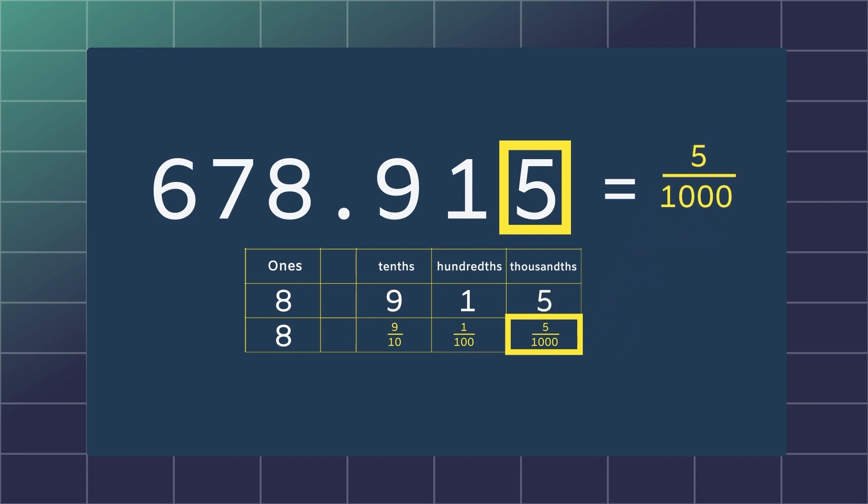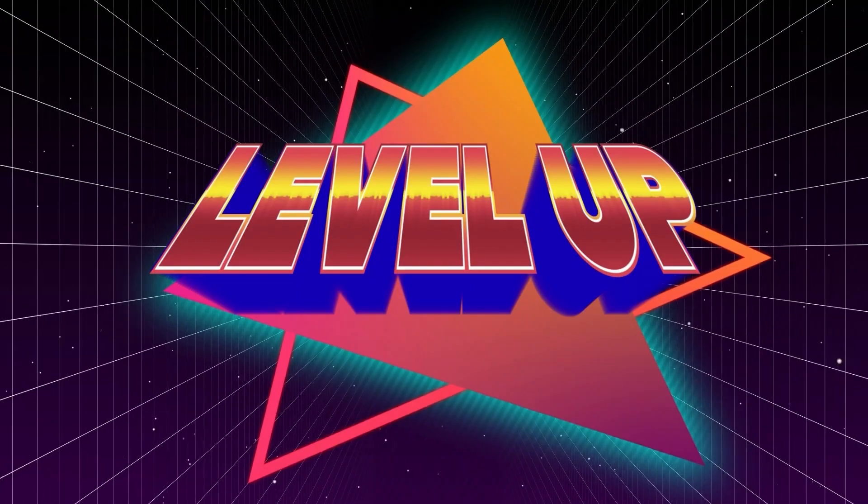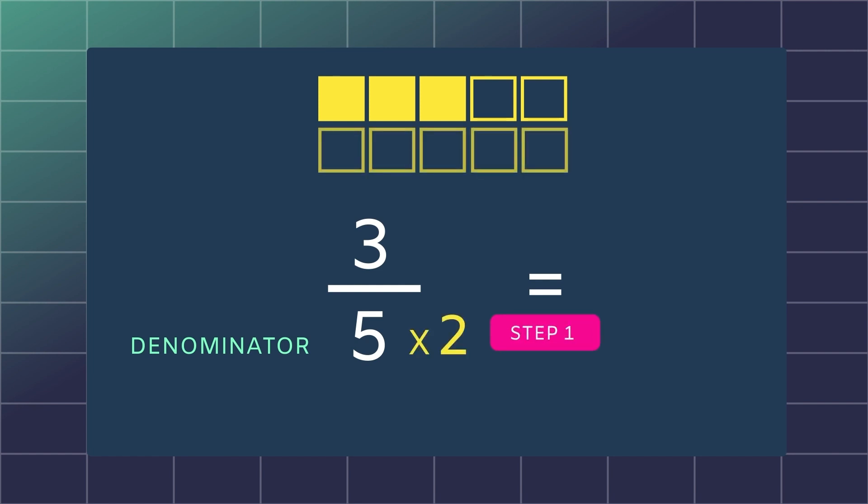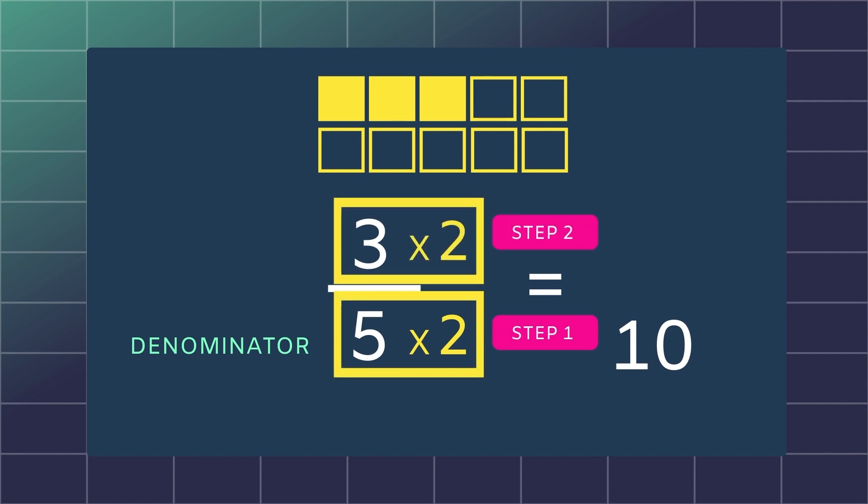Great job for getting that! Let's move up a level and try the fraction three fifths. Writing that in decimal notation is a little harder. The trick is to change the bottom number, the denominator, into a base 10. We will multiply the 5 by 2, and now our denominator will be 10. But what you do to the bottom, you have to do to the top. So we must multiply the top number, the numerator, by 2 as well.